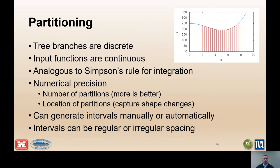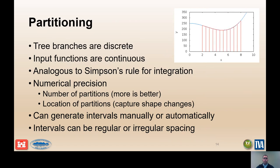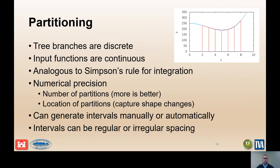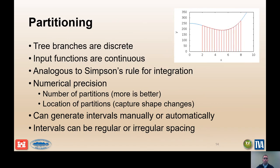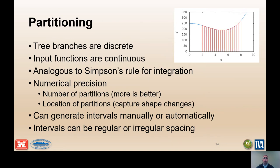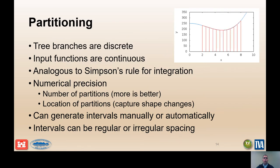Annual probability of failure and risk are obtained using numerical integration procedures. Because event tree branches are discrete and input functions are continuous, it is necessary to partition or discretize the loading, analogous to Simpson's rule for integration. In this example, the area under the curve is evaluated by dividing the total area into little trapezoids. With these numerical integration methods, the precision is a function of the number of partitions. More is better. The partitions can be generated manually or automatically, and they can be equally or irregularly spaced.